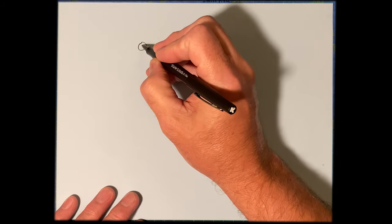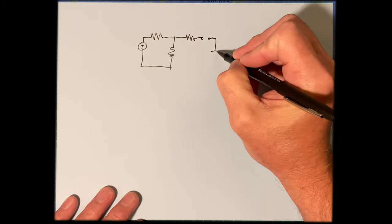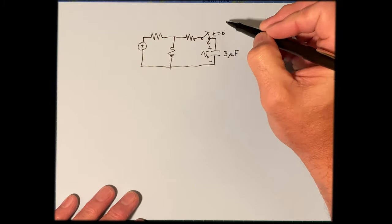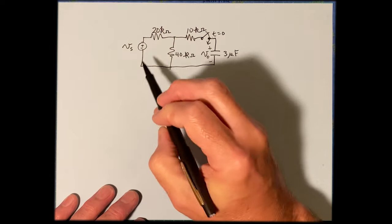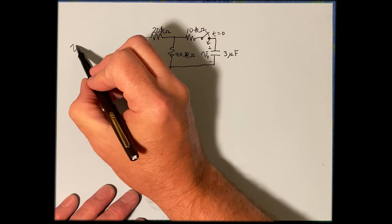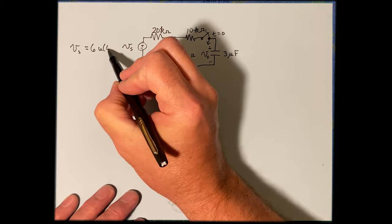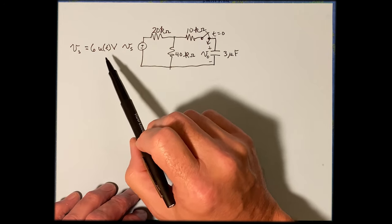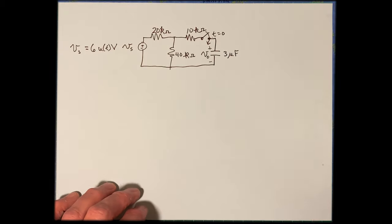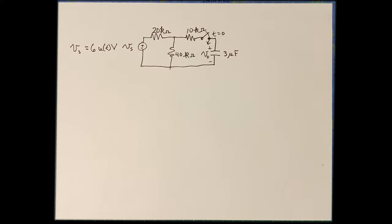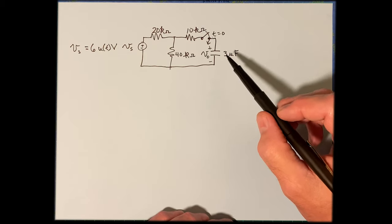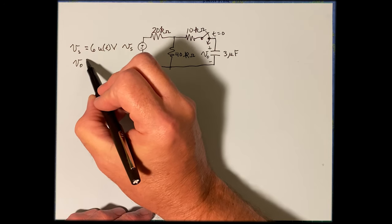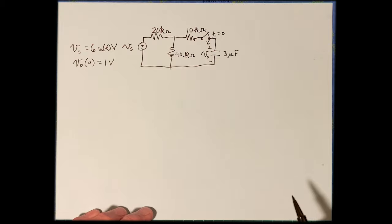We're going to solve an RC circuit first. We have a voltage source equal to 6·U(T) volts. So before T equals 0 it's 0, but at T equals 0 it's 6 volts, and at that same time the switch is closed. Let's also suppose there's already a voltage on the capacitor: V₀ at T=0 is 1 volt.